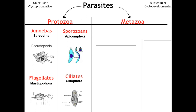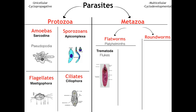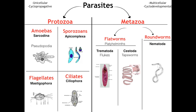For our metazoans, their phyla are broken up according to their shape. We have flatworms, or our platyhelminths, and our roundworms. There are two classes of flatworms that we need to know: the first is trematoda, or our flukes, and second is cestoda, or our tapeworms. And finally for our roundworms, we have nematoda, of which there are two subcategories: tissue nematodes and GI nematodes.